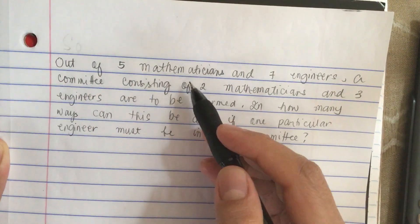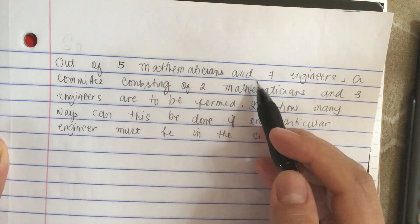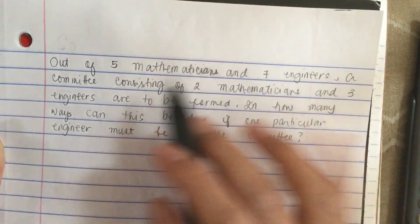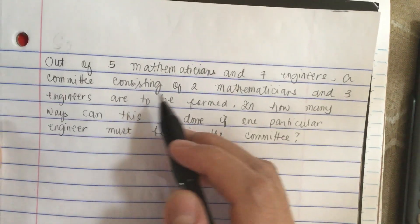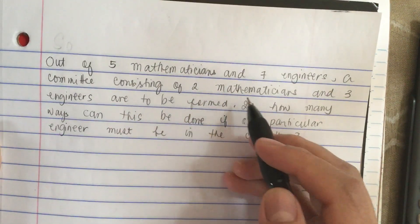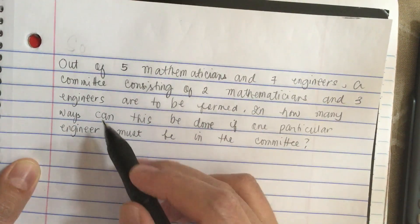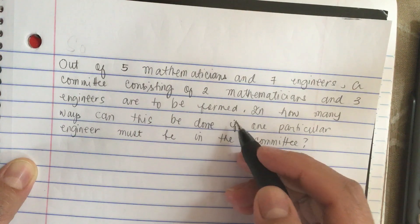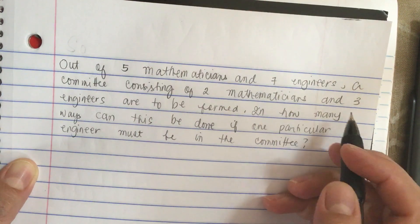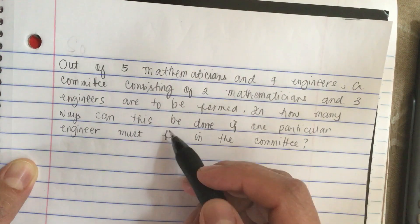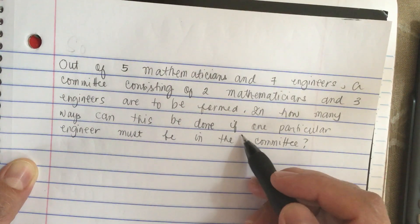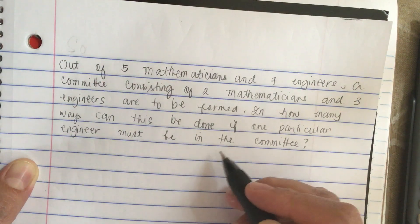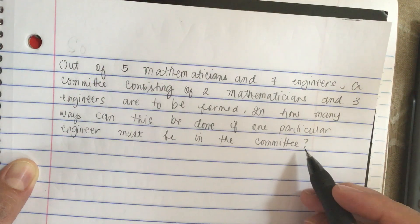Out of five mathematicians and seven engineers, a committee consisting of two mathematicians and three engineers is to be formed. In how many ways can this be done if one particular engineer must be in the committee?